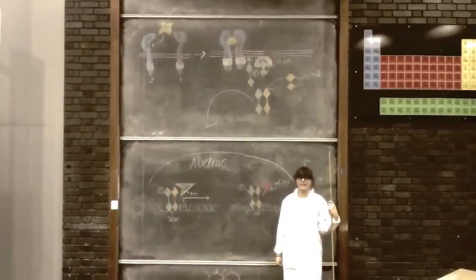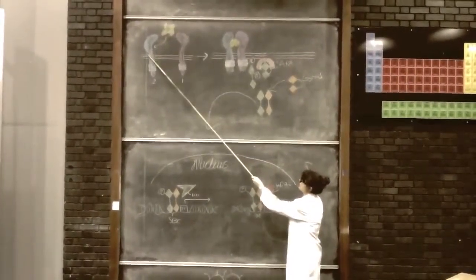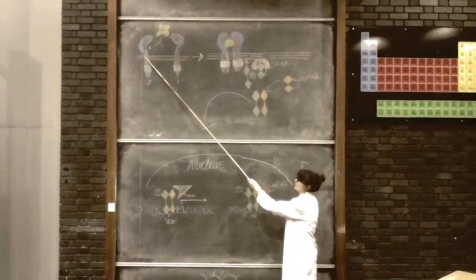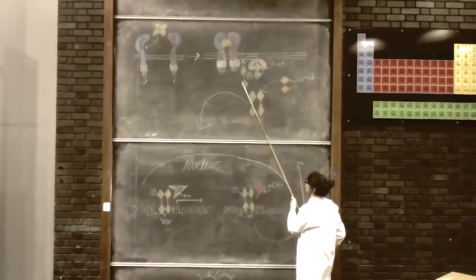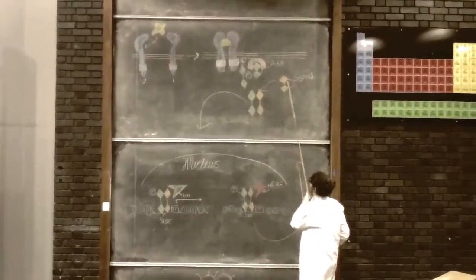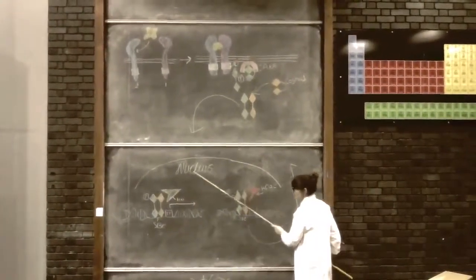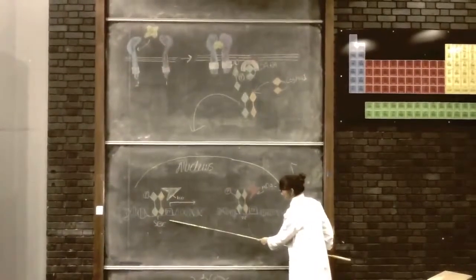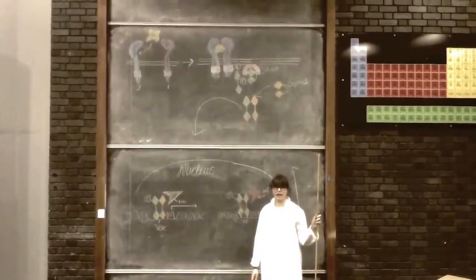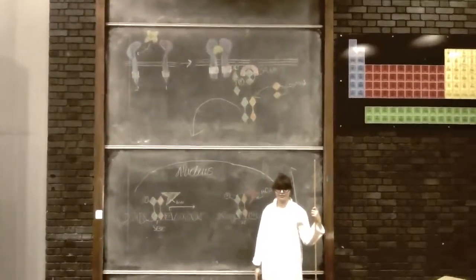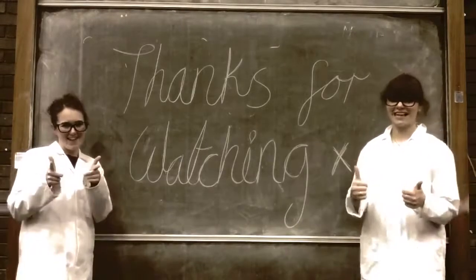So class, to summarize the TGF-beta signaling pathway: the ligand binds to type 2 serine/threonine kinase receptor. These receptors then homodimerize and phosphorylate SMAD. This then comes together with co-SMAD to oligomerize, and they go into the nucleus. In the nucleus, they turn on or turn off genes, and this changes the transcription profile of the cell, leading to different cellular effects. I hope you've enjoyed your lesson on TGF-beta signaling. Thanks for watching.